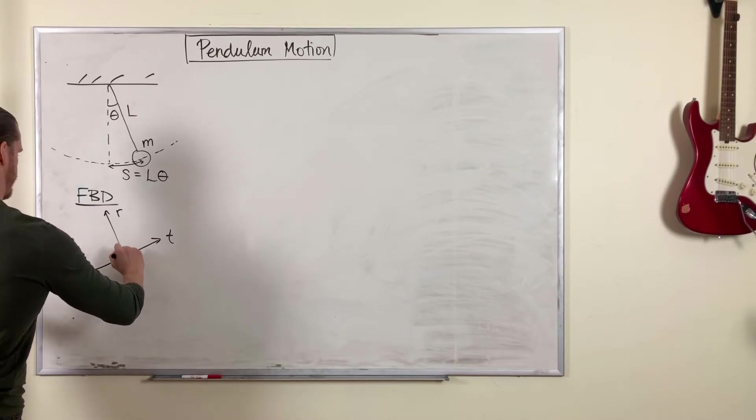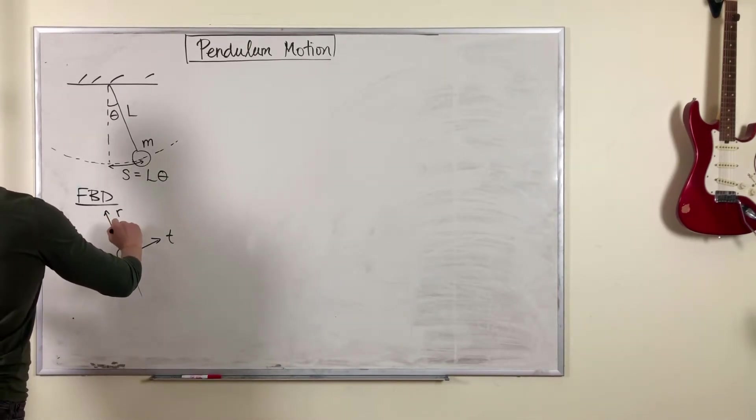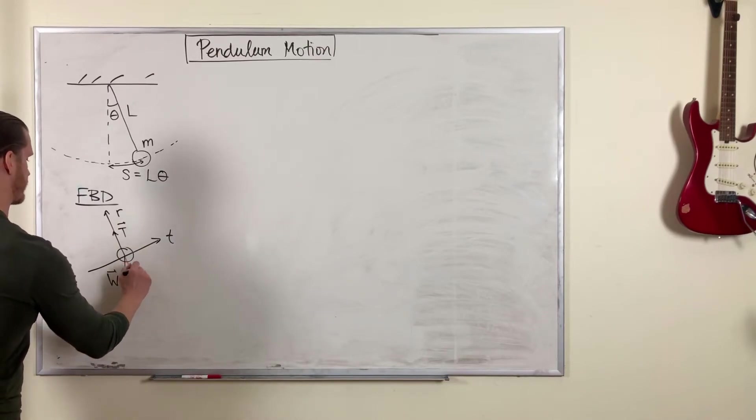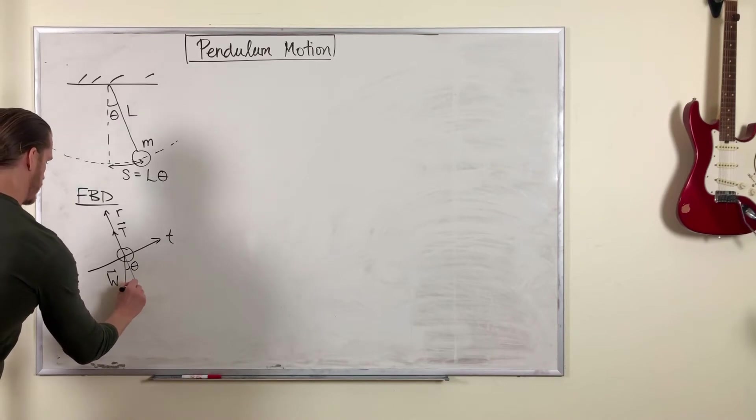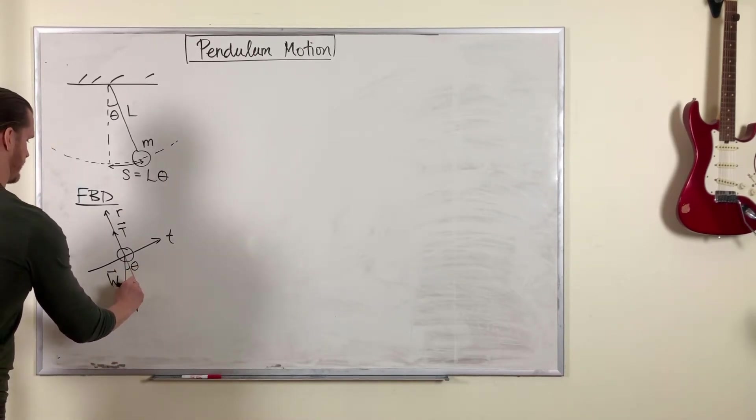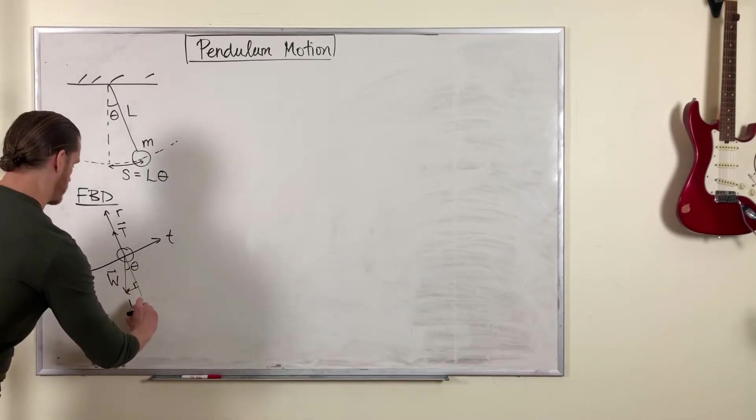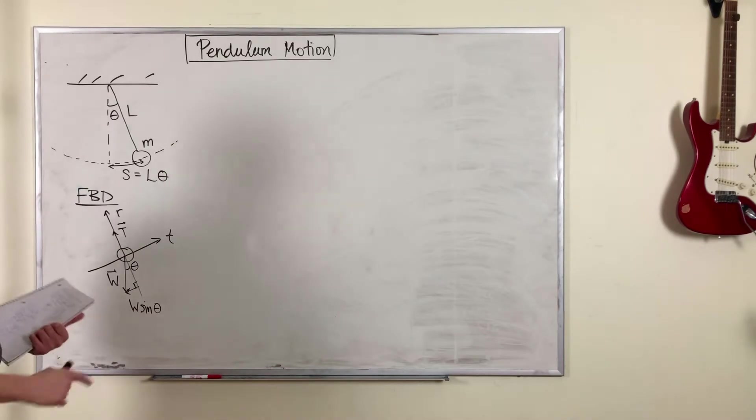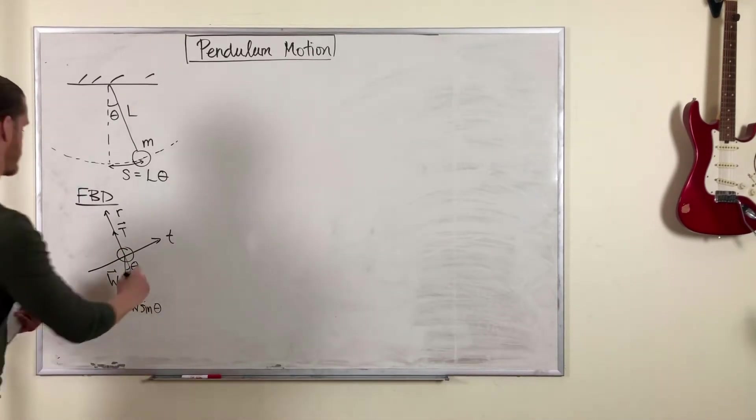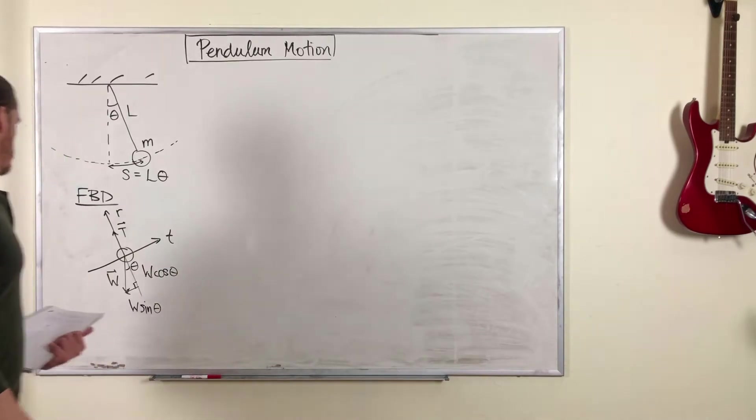And there's a gravity force which acts straight down. There's the tension force in the string that acts along the string. With a little bit of geometry, you can see that this angle here is theta. So that means we have a component of gravity in the tangential direction, actually the negative tangential direction. That gets the sine of theta, because it's opposite, w sine theta. And we have a component that's parallel to the radial direction. That is w cosine theta adjacent to this angle.